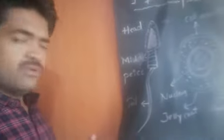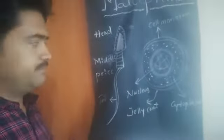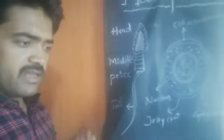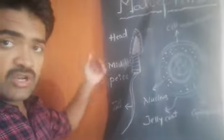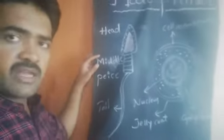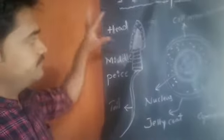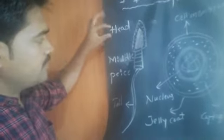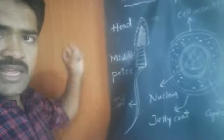Let us see in detail about the sperm. Before going to see its characters we have to study about the structure of sperm. In the sperm there are mainly three portions: this portion is called the head portion, this is the middle piece, and this is the tail.